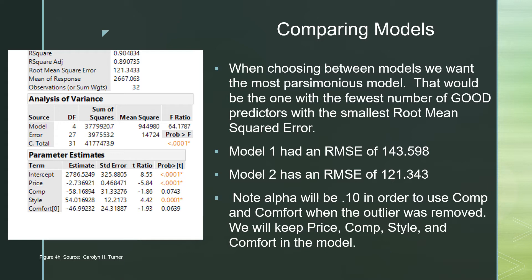Our analysis of variance contains the overall model test with an F-ratio of 64.17 and a p-value of .0001. If asked to choose between this model and a previous model, the root mean squared error here is 121.343, which is less than the previous model's 143.598. Therefore this is the better model, because error is bad and smaller is better.